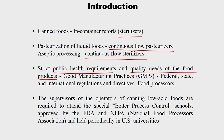We must maintain strict public health requirements and quality needs of food products — this is called Good Manufacturing Practices, which should be strictly followed along with federal, state, and international regulations. For example, in milk pasteurization, Mycobacterium tuberculosis was historically identified as the most heat-resistant microorganism, but now Coxiella burnetii is the recent target organism. The heat resistance of microorganisms also changes based on environment and evolution.